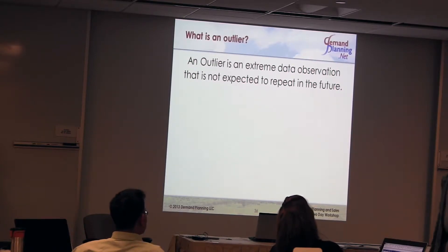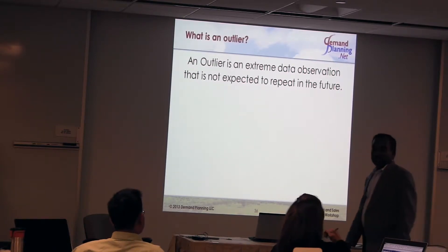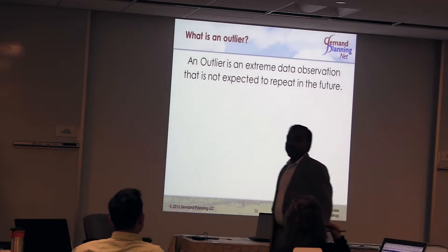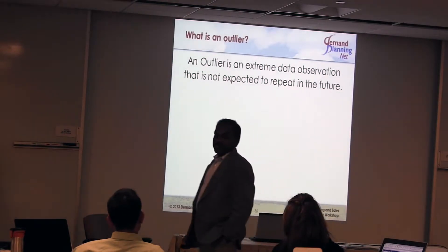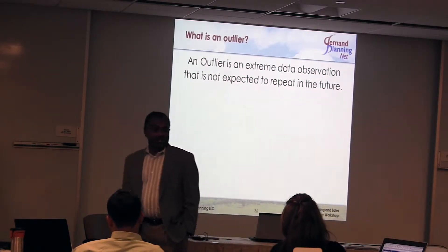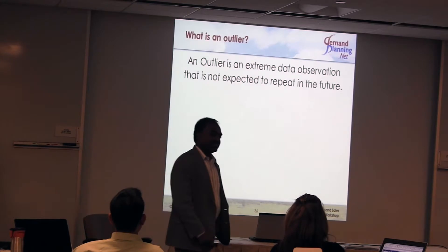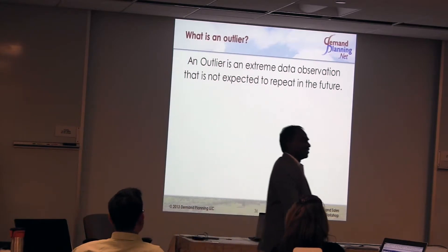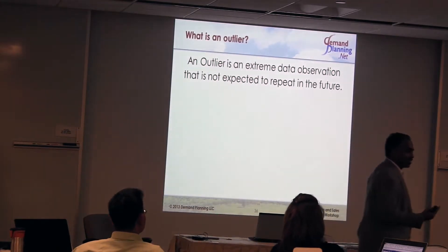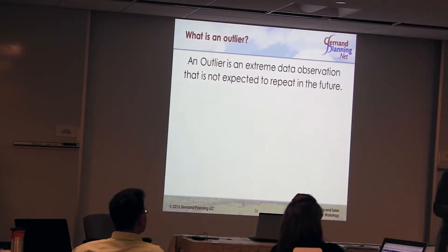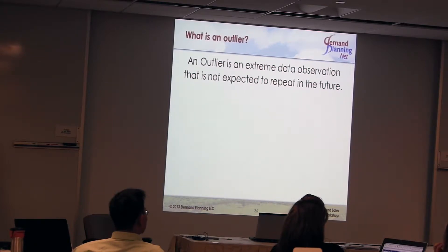On the other hand, if it's a mistake — buy one, get one free, and somebody typed in an extra zero making it buy one, get ten free — they were fired. That's an outlier. It happened once, it was a mistake. You need to identify that because it's extraordinary volume that happened by mistake and it's not going to repeat again.